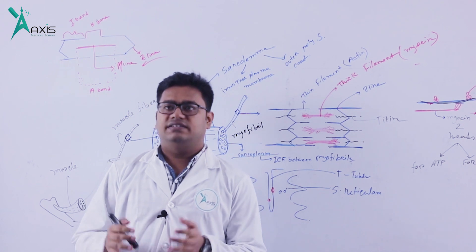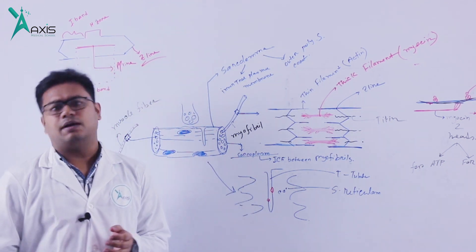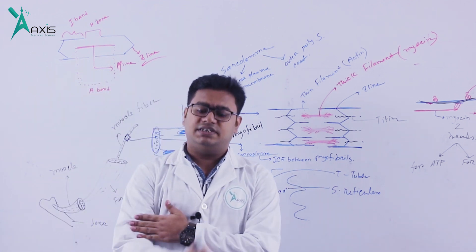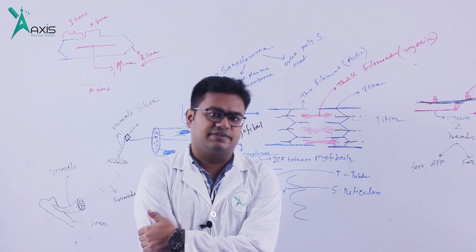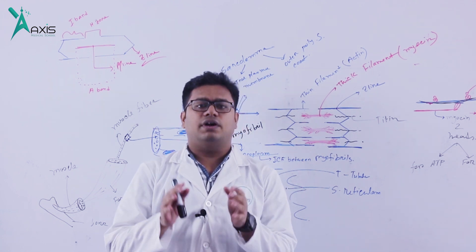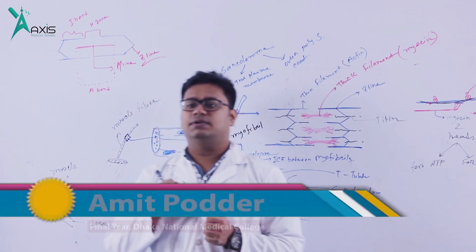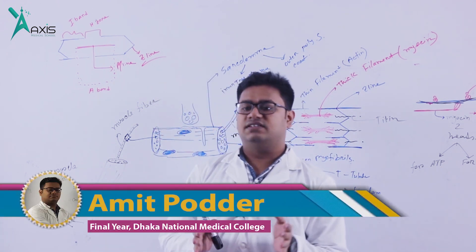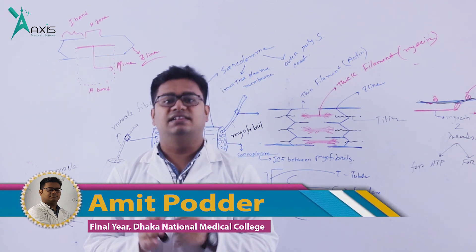What is skeletal muscle? Skeletal muscle is a voluntary muscle. Our body's muscles — biceps, triceps, pyr muscles, quadriceps — these are voluntary muscles and skeletal muscles.